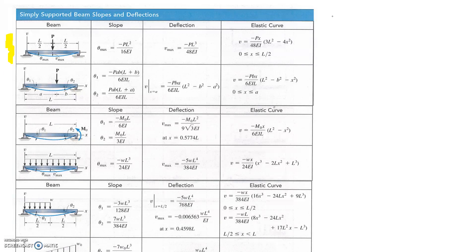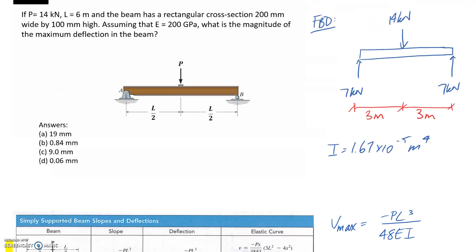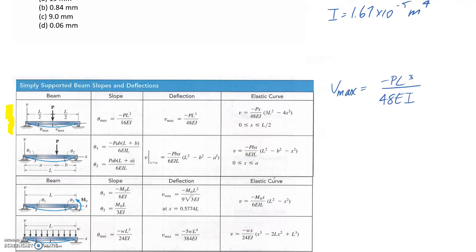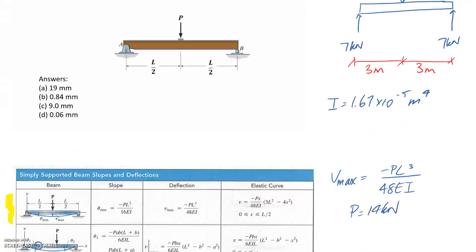So let's take this out. So the maximum deflection can be described with this equation. So P is the force that's applied in the centre. So we have a force of 14 kN. L is L on 2 on either side here. So our L was 6 metres, the length of the beam.